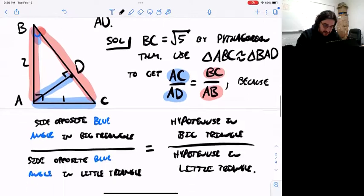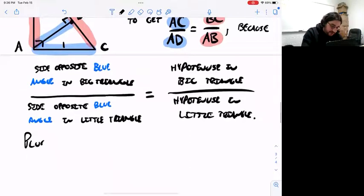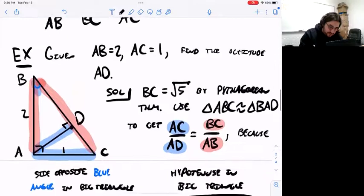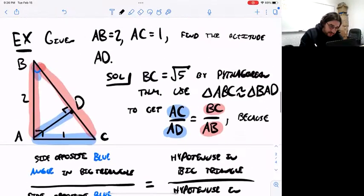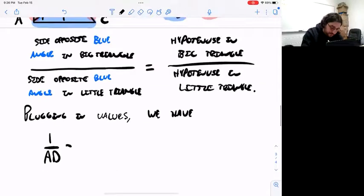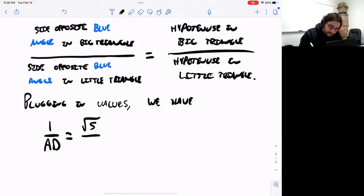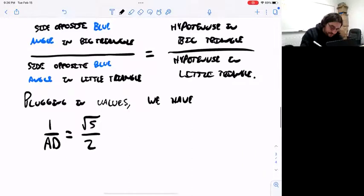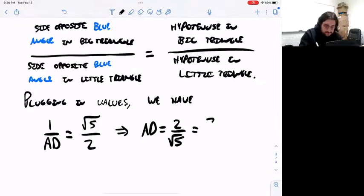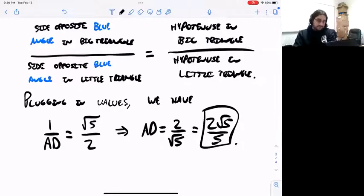Once you have this ratio now we just plug in the unknowns and solve for the unknown. Plugging in values, AC is one, AD is unknown, BC is root five, and AB is two. Now just reciprocate both sides to solve for AD. So I get AD is two over root five, which you can leave it in that form or you could say it's two root five over five. That would be the altitude of that triangle.